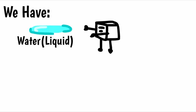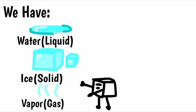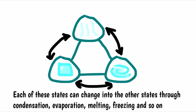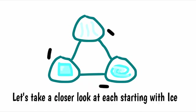Let's talk about these states. We have water, which is a liquid, ice, which is a solid, and vapor, which is a gas. Each of these states can change into the other states through condensation, evaporation, melting, freezing, and so on. Let's take a closer look at each, starting with ice.